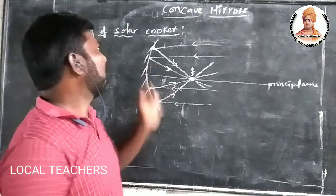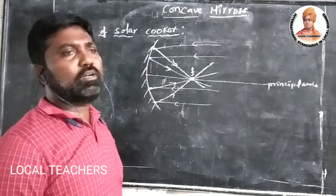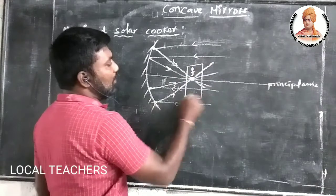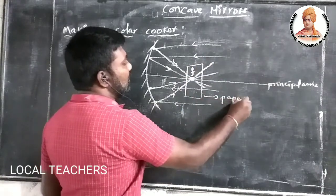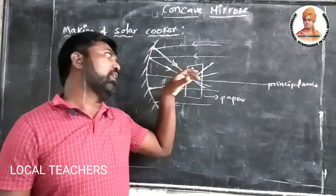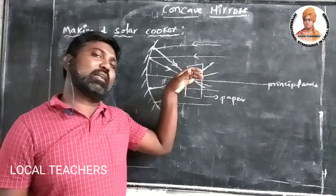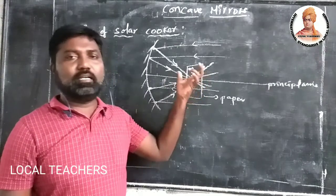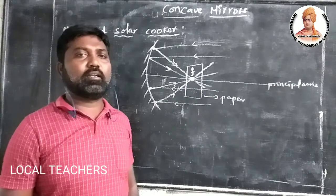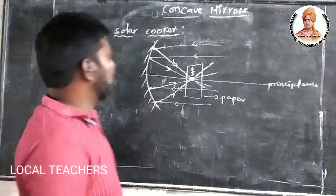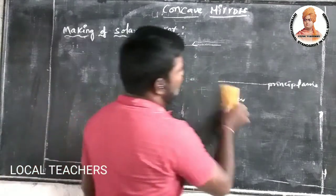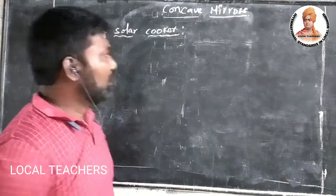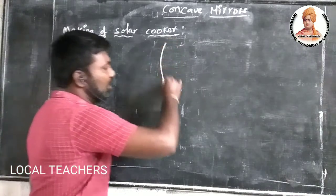Based on this property, we are going to design a solar cooker. At the focus point, if we keep a paper, all the reflected rays will be focused and converged at that point on the paper, and after some time it will burn — fire will come out from the paper. Based on this principle, we are designing the solar cooker by arranging more mirrors in the shape of a dish antenna.